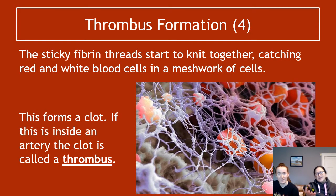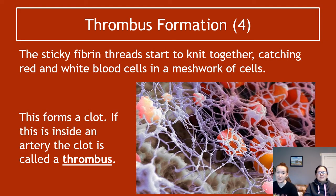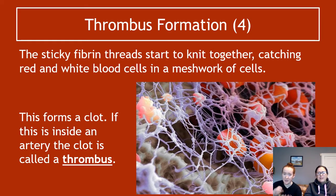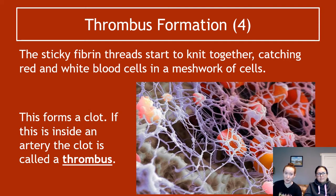The sticky fibrin threads start to knit together, making a kind of mesh like a spider's web, and in doing so they catch both red and white blood cells. This starts to form a mass — this is the clot forming. The thrombus that actually forms is a result of the red and white blood cells that have been caught in this sticky fibrin net.